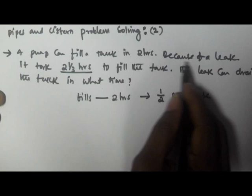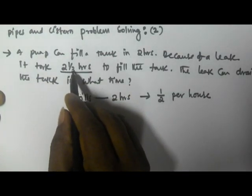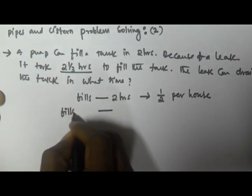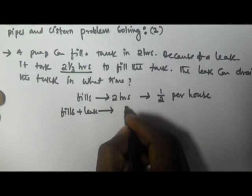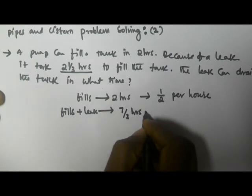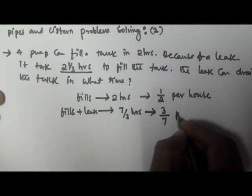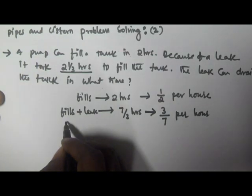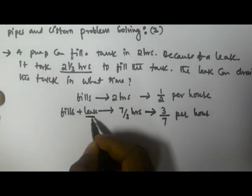Because of a leak, it took 2 and 1/3 hours. 2 and 1/3 is equivalent to 7/3. This represents filling plus leak together. It took 7/3 hours, so if you reverse this, we will get 3/7 per hour.